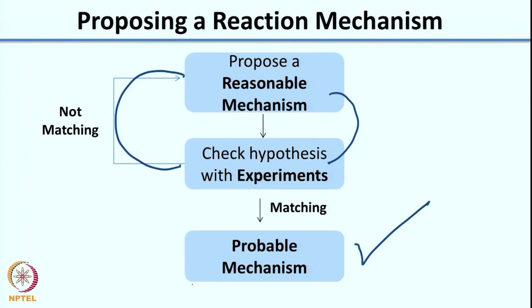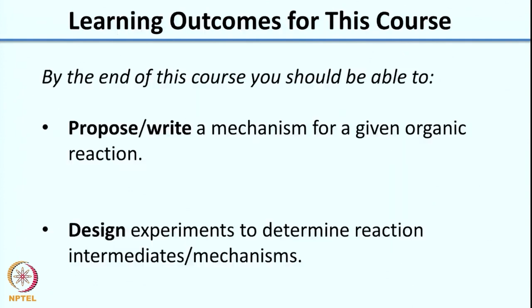For this to work, you need to be able to propose a reasonable mechanism and design experiments to figure out if the mechanism is correct. The learning outcomes for this course are: by the end, you should be able to propose or write a mechanism for a given organic reaction, and you should be able to design at least some basic experiments to determine whether your reaction mechanism is correct.